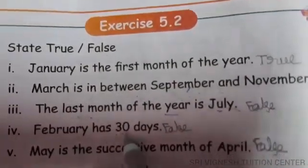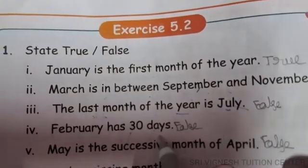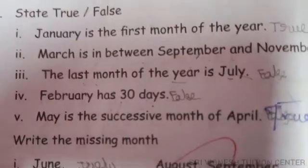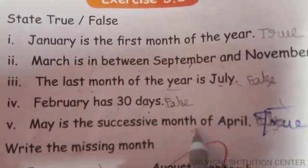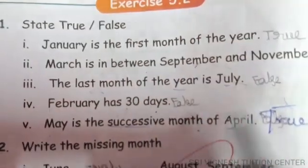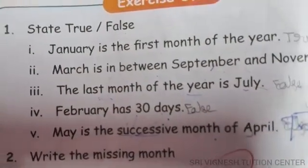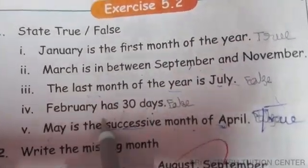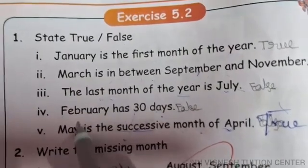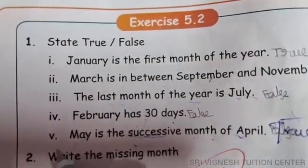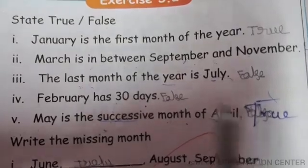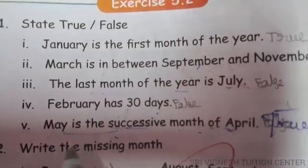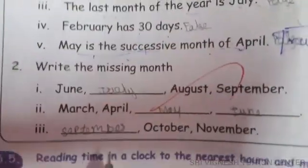Next statement: February has 30 days. No, February has 28 days, so this is false. Next: May is the successive month of April. May comes after April, so that is true.